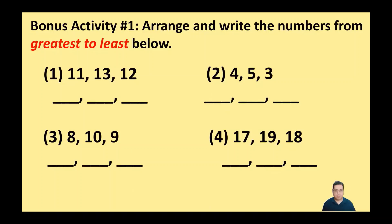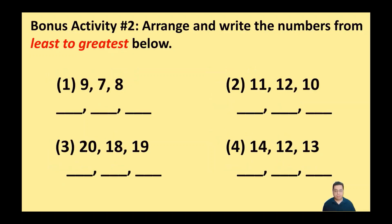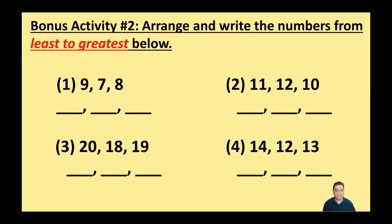I've got a couple of bonus activities here. For the first one, I want you to arrange and write the numbers from greatest to least below — four problems where you put them in the correct order based on the directions. For the second bonus activity, arrange and write the numbers from least to greatest below. Make sure you read the directions first in order to understand what you're doing.